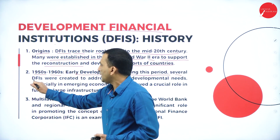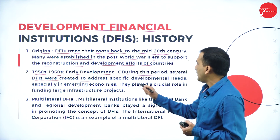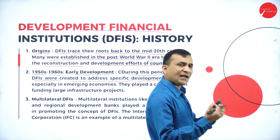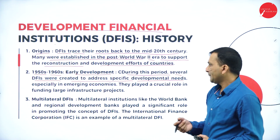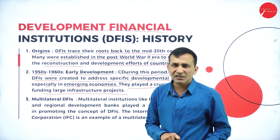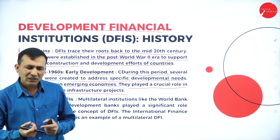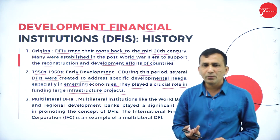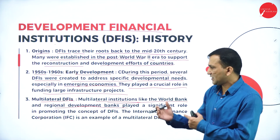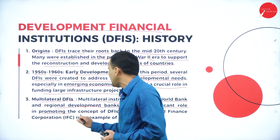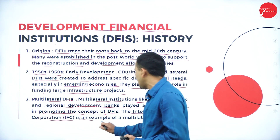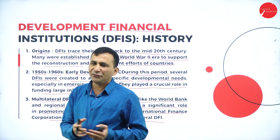In the 1950s and 1960s, several development financial institutions were created to address specific development needs — especially for neglected and weaker sections — to promote agriculture, industry, and economic growth in emerging economies. They played a crucial role in funding large infrastructure projects like roads and bridges undertaken by central and state governments. Multilateral institutions like the World Bank and regional development banks played a significant role in promoting DFIs. The International Finance Corporation is an example of a multilateral development financial institution.